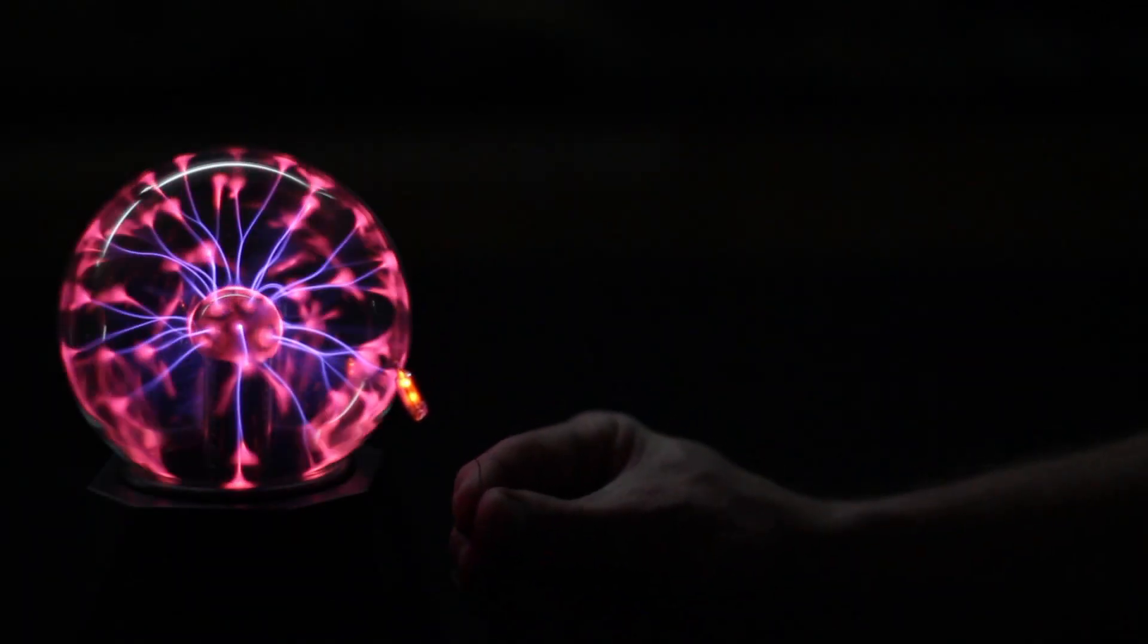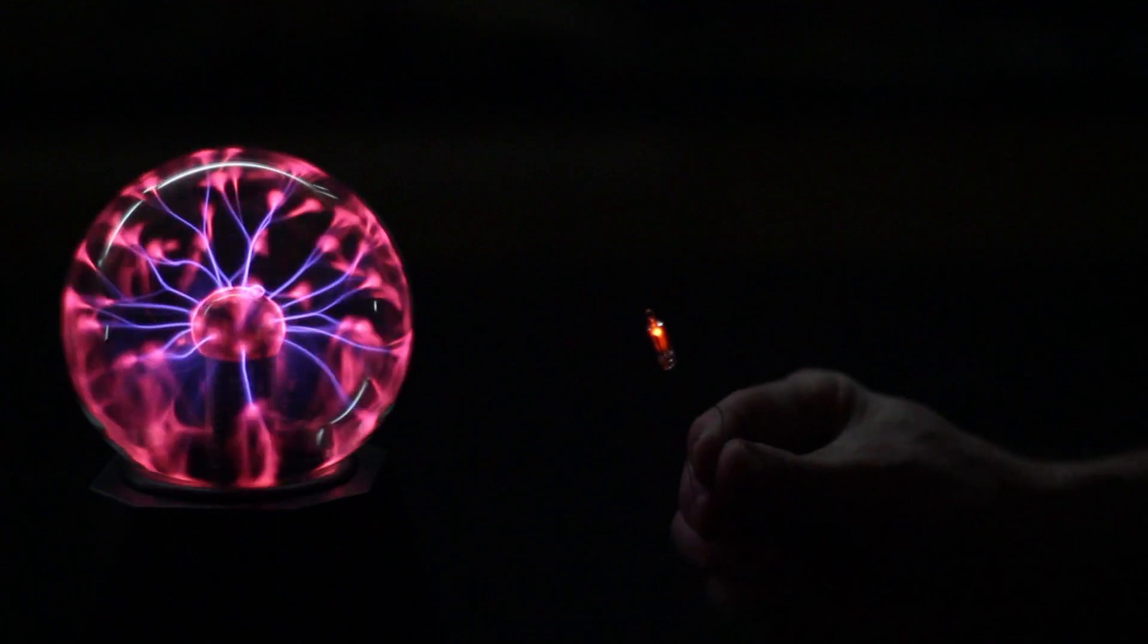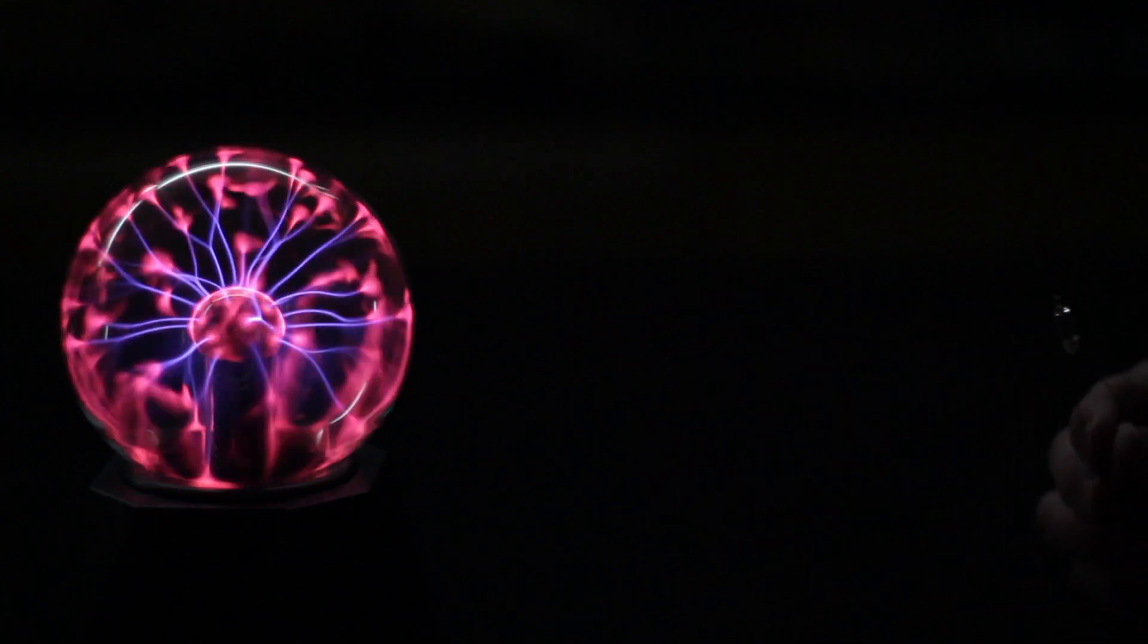You'll also notice that the electric field is not strong when you're far from the globe. You can see this with a neon bulb, or a diode. It gets weaker with distance.